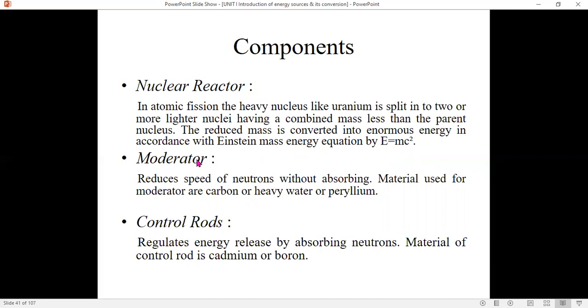We require a moderator. It reduces the speed of the neutrons without absorbing them. Material used for it is heavy water or beryllium. Control rods are required. They regulate the energy release by absorbing neutrons. Material of control rod is either cadmium or boron.